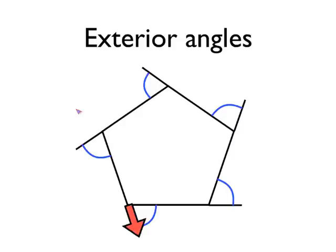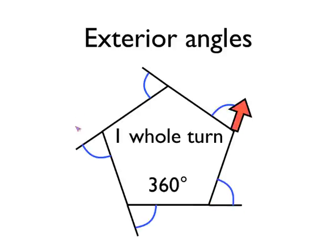Rotate it through the fourth exterior angle and move it to the fifth vertex. Rotate it through the fifth vertex and then move it back to where we started. And hopefully you could see that as we went around the polygon, that red arrow did one whole turn as we went around there.